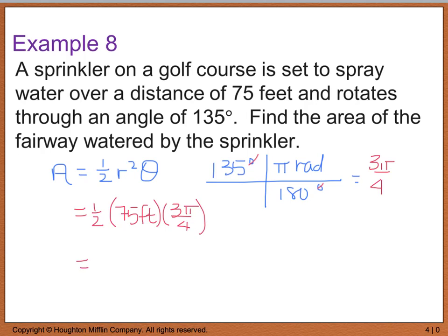So, now when I go and I plug into my formula, I have 1 half, my radius is 75 feet, and then I have 3 pi over 4 radians. And I did forget to square my radius there. So, when I multiply this together on my calculator, I get 6,626.8 square feet.